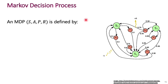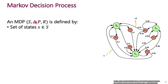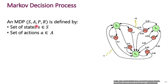An MDP is typically described by the tuple of S, A, P, and R. Capital S is the set of states — in the grid world, all the different cells you can occupy; in the abstract example, S0, S1, and S2. Capital A is the set of actions — in the grid world, north, south, east, and west; in the abstract example, A0 and A1.